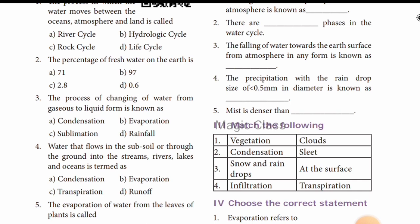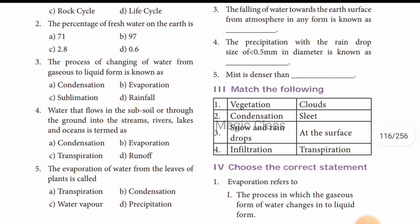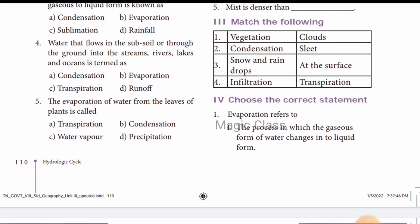The falling of water towards the earth's surface from the atmosphere in any form is called precipitation. For match the following: vegetation is connected with plants; condensation gives clouds; snow and rain drops give sleet; infiltration relates to the surface of the soil.